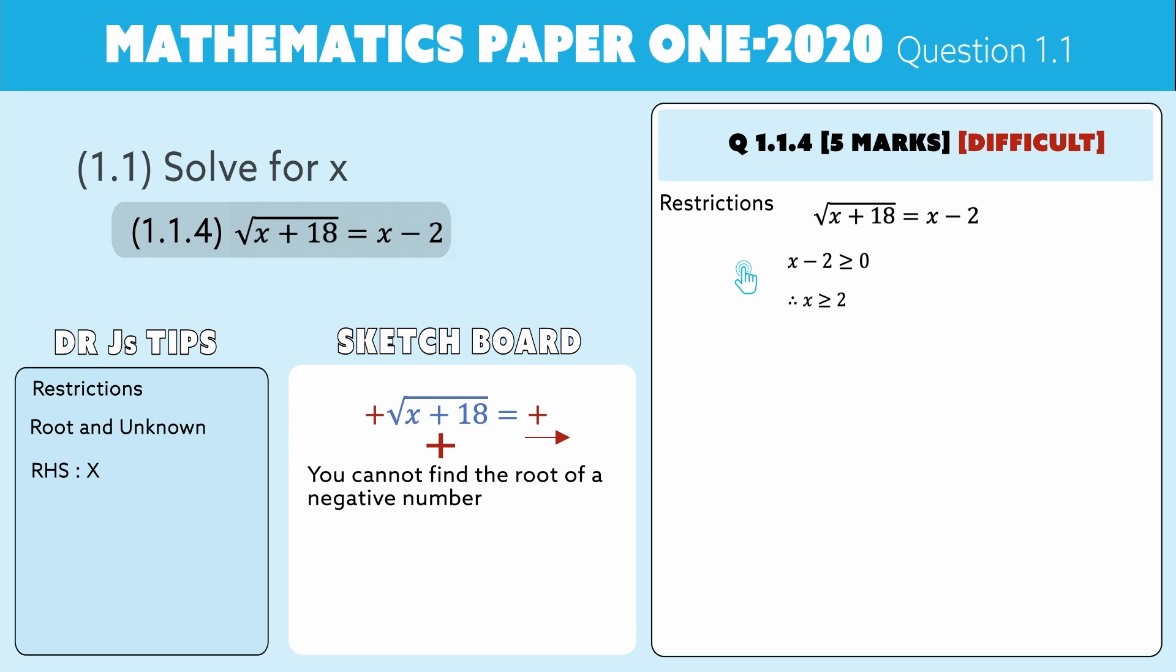We're not finished yet. We have something underneath the square root, and that something is x plus 18. It has to be positive, so that also has to be bigger and equal to zero. That would mean that x is bigger and equal to minus 18. We don't have to change the inequality because we're not multiplying with a negative.